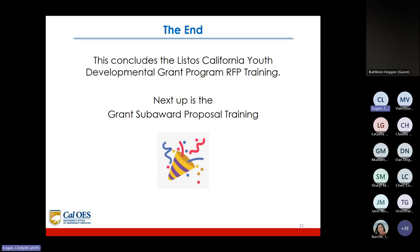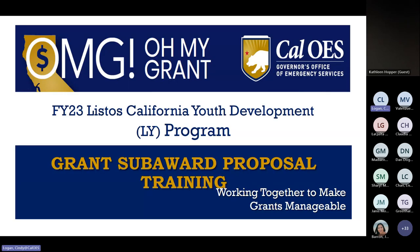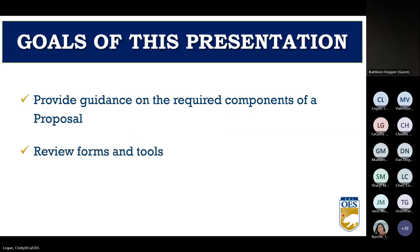This concludes the first presentation covering the overview of the request for proposal. The next part is about the forms and how to complete them. Today we are going to provide guidance on the components required for a proposal, review the forms on the RFP checklist, and familiarize you with some tools that are available.